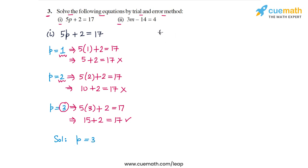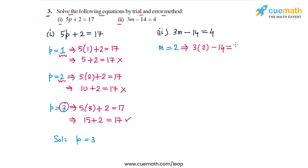Now similarly let's do part 2. In part 2, the equation is 3M minus 14 equal to 4. Let's try giving different values to M to get the LHS and RHS to match. Let's take M equal to 2. For M equal to 2, on the LHS we get 3 times 2 minus 14 equal to 4 on the RHS. 3 times 2 is 6, so 6 minus 14 equal to 4. But 6 minus 14 is minus 8, not 4. So M equal to 2 does not work.